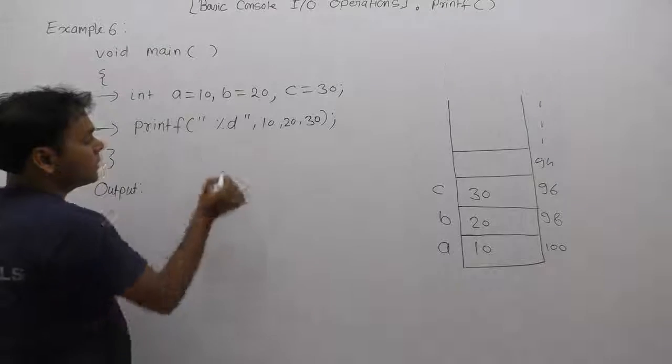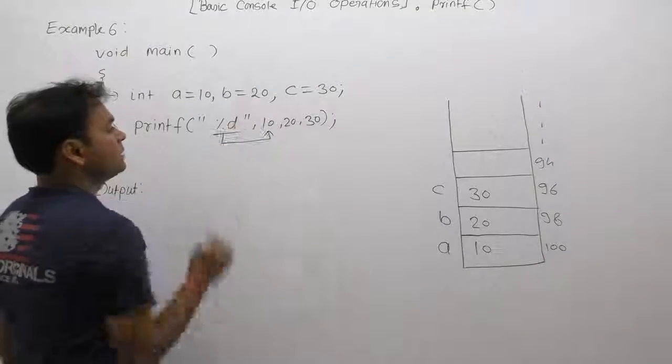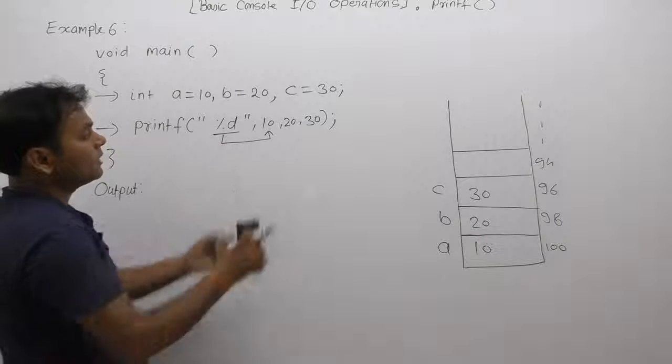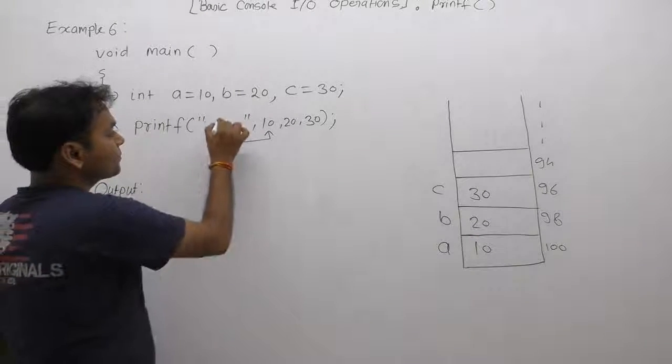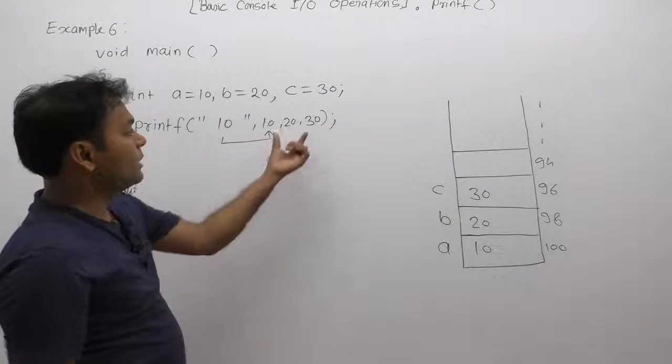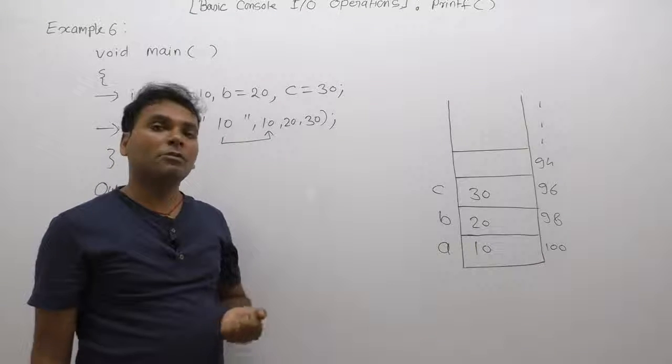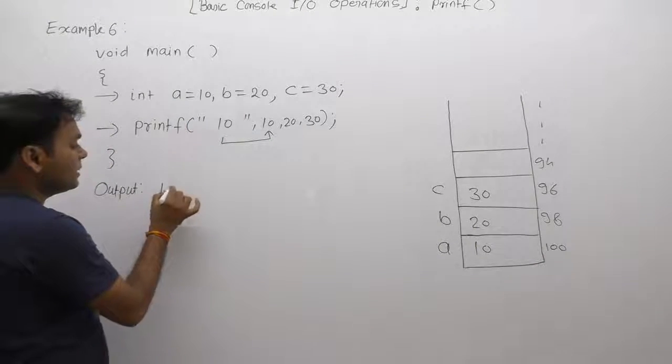Next one, first percent d is placed by replacing value of first argument. What is the value? 10. Therefore, it is replaced by simply 10. The final arguments are also displayed, but because 20 and 30 don't have corresponding format specifiers, it surprisingly displays only 10.